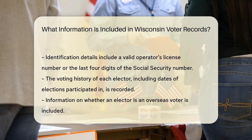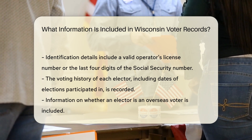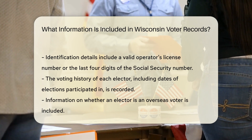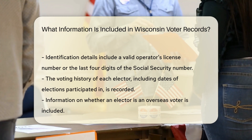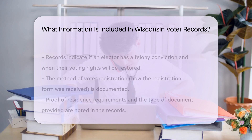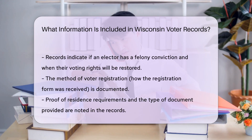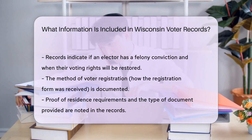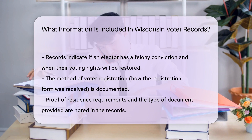Felony conviction status: if an elector has been convicted of a felony, this information is recorded, along with the date when their voting rights will be restored. Registration method: the method by which the elector's registration form was received is noted.